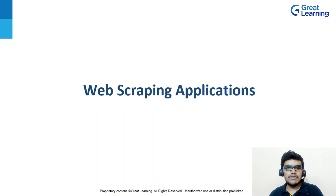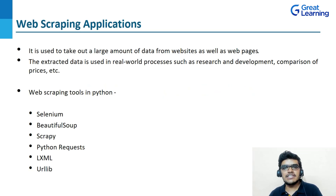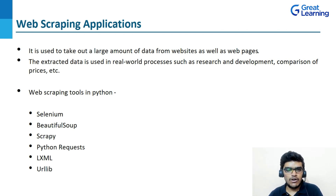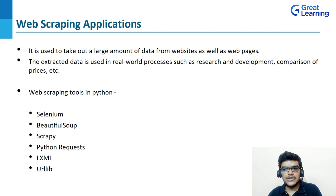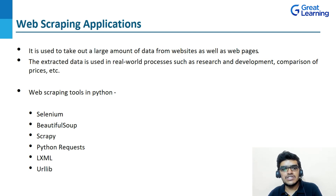Python is also used in web scraping. Web scraping is basically used to extract large amounts of data from websites or web pages. The extracted data is used in real-world processes such as job listings, research and development, and comparison of prices. Some of the best Python web scraping tools include Selenium, Beautiful Soup, Scrapy, Python Requests, LXML, and Urllib.